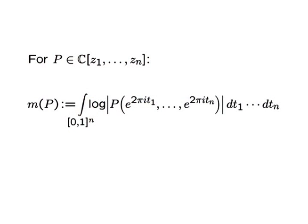Let's start with some definitions. For a non-zero polynomial p in n variables with complex coefficients, the logarithmic Mahler measure of p is defined by the integral you see in front of you. This can be thought of as the log of the geometric mean of the absolute value of p, taken over the product of n copies of the complex unit circle.